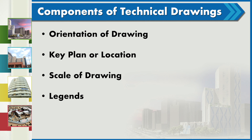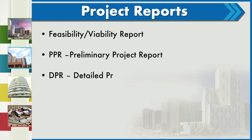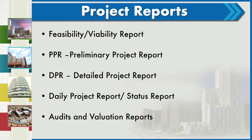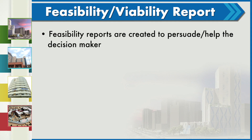Technical drawings also include orientation, key plan location, scale of drawing, legends, and many other details. Now we will talk about project reports. There are various types of reports: feasibility or viability report, preliminary project report, detailed project report, daily project report or status report, and audits and valuation reports.